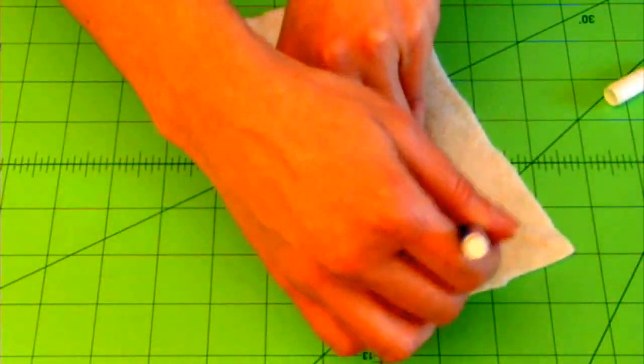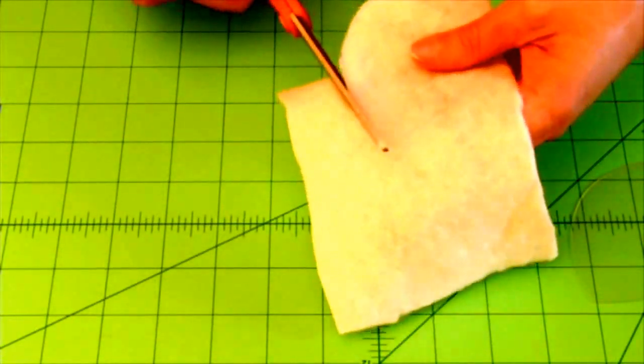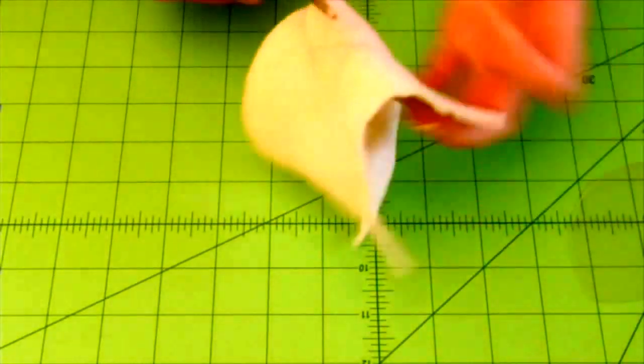Using the very same template, you'll trace that onto your piece of batting. You'll actually cut that out right along your traced outline.